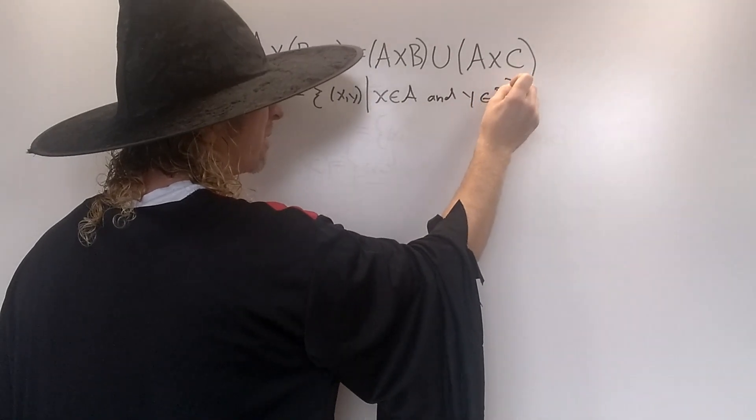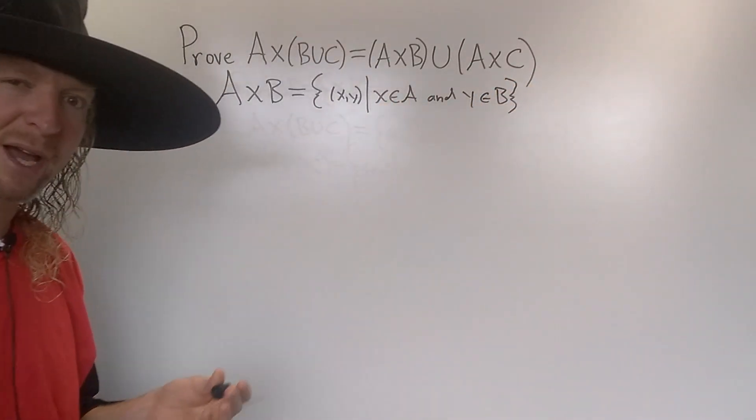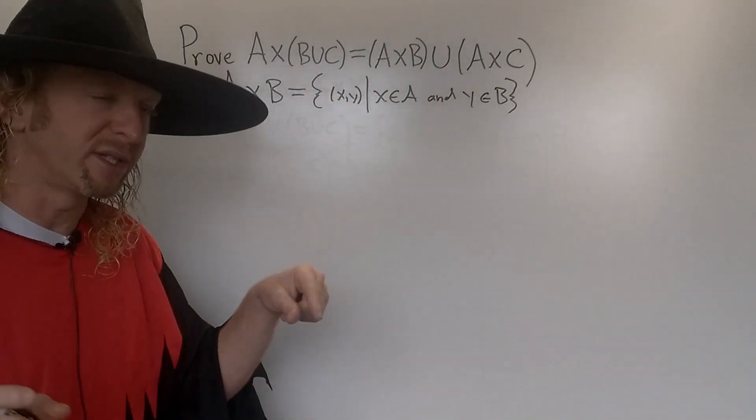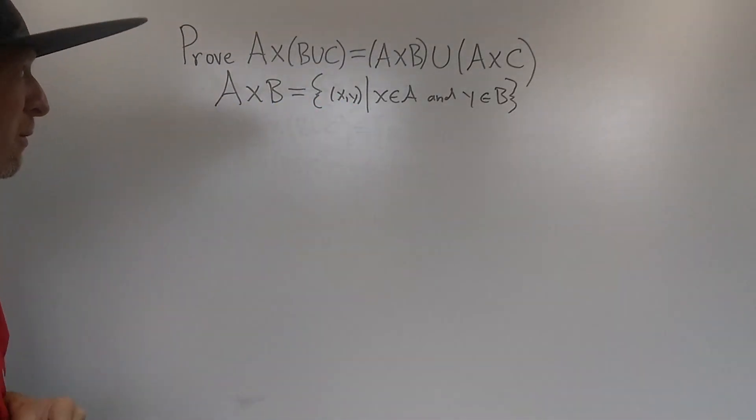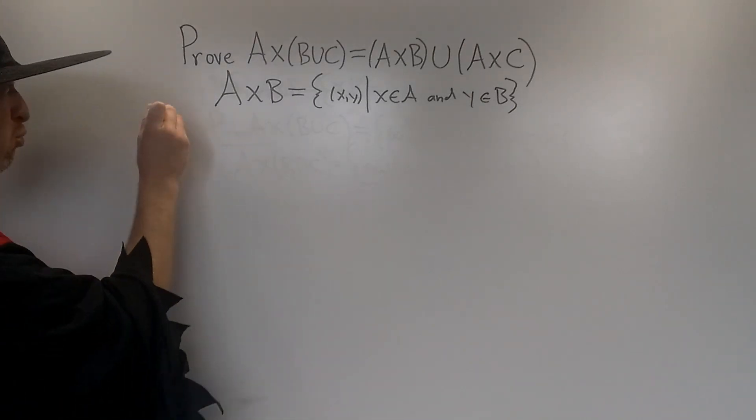So it's a set of all ordered pairs where the first component, your x-coordinate if you want to think of the coordinate system, comes from A and the y-coordinate or your second component comes from B. Alright, let's go ahead and do this proof.